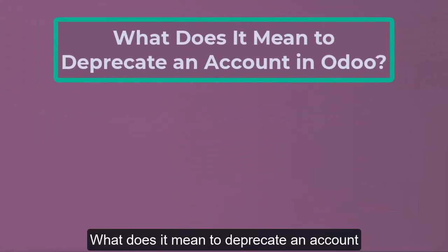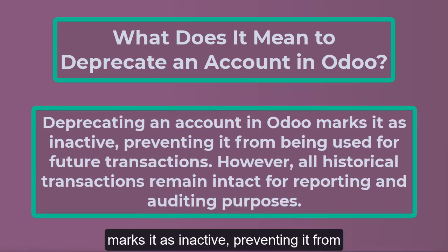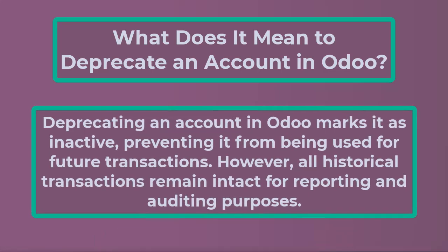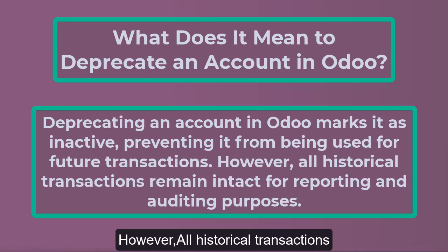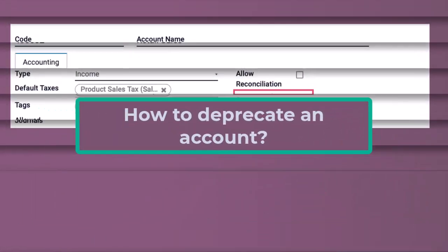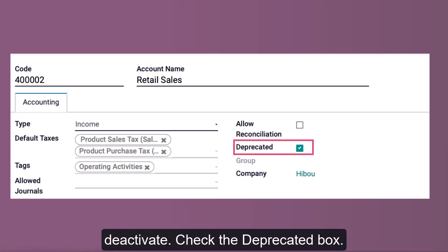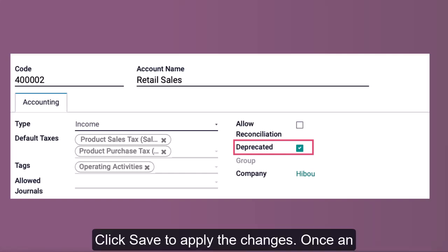What does it mean to deprecate an account in Odoo? Deprecating an account in Odoo marks it as inactive, preventing it from being used for future transactions. However, all historical transactions remain intact for reporting and auditing purposes. To deprecate an account, open the chart of accounts in Odoo, select the account you want to deactivate, check the Deprecated box, and click Save to apply the changes.